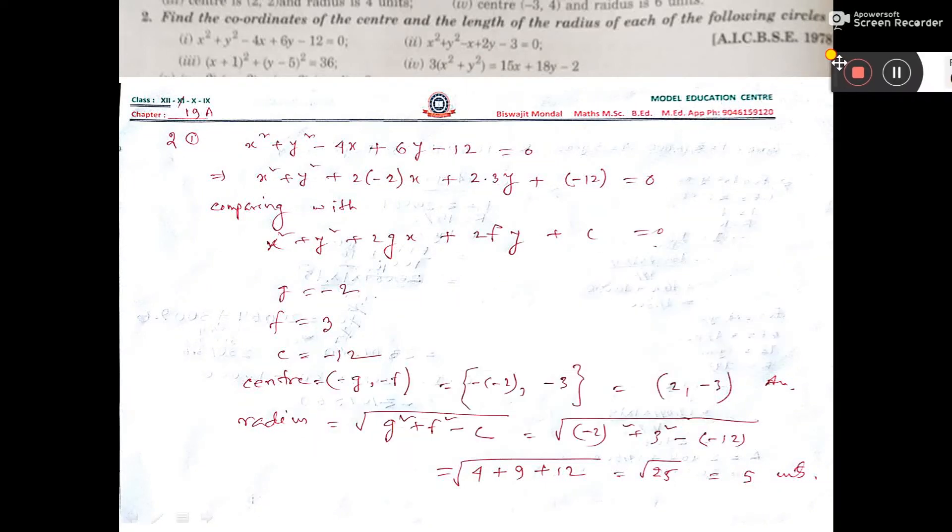Now sum 2 part 1. Find the coordinate of the center and the length of the radius of the following cycles. This one number you see.